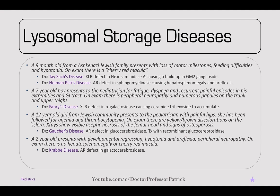Moving into lysosomal storage diseases, a 9-month-old from an Ashkenazi Jewish family presents with loss of motor milestones, feeding difficulties, and hypotonia. On exam, there is a cherry-red macula. The differential is Tay-Sachs disease or Niemann-Pick disease. Tay-Sachs is an autosomal recessive disease involving hexosaminidase A deficiency, causing a buildup of GM2 ganglioside. Niemann-Pick disease is autosomal recessive sphingomyelinase deficiency, causing hepatosplenomegaly and areflexia. The key difference is that Niemann-Pick causes appreciable hepatosplenomegaly, while Tay-Sachs does not.